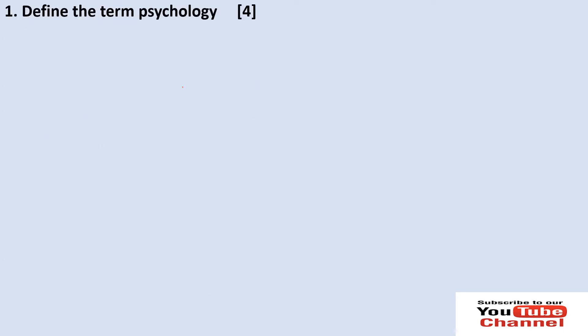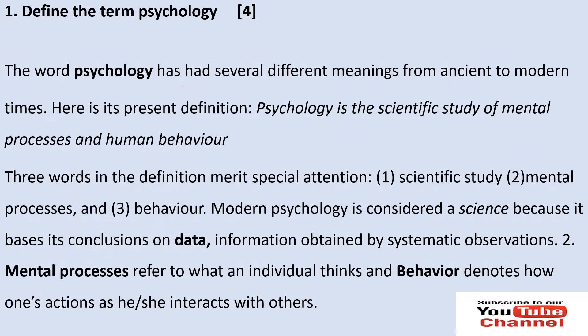Number one: define the term psychology. You may choose to write the answers to this question and then check with the answers provided, or you can choose to review the questions as we go. The word psychology has several different meanings from ancient to modern times. The term 'psych' comes from the Greek word psyche, which means mind, and 'logi,' which means study of. So it is defined as the scientific study of mental processes and human behaviours.